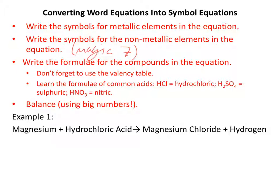Quite often, we're going to need to use our valency table to help us work out what the formulae are. Sometimes we have acids, and you need to learn these. You don't get given these in the exam. You need to know that hydrochloric is HCl, sulfuric is H2SO4, and nitric is HNO3. Only after we've done all the writing of the formula do we get to use big numbers right at the end.